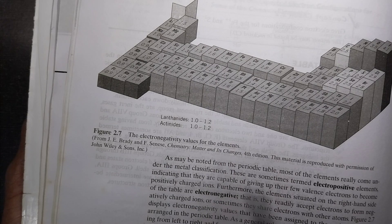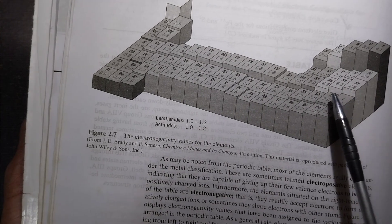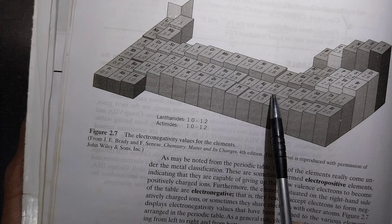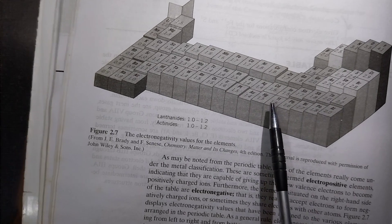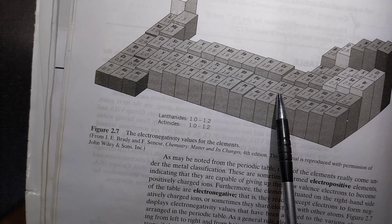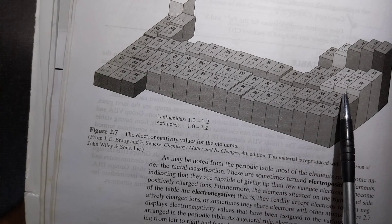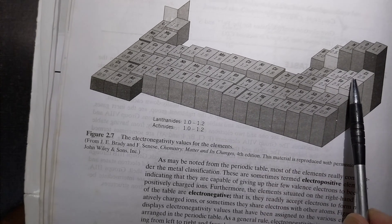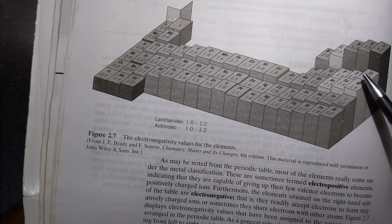Now in this we want to take a look at the electronegativity of cadmium. Cadmium is here and as you can see this is 1.25 and sulfur should be somewhere here, the sulfur value is 2.4.